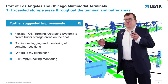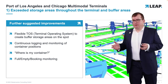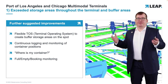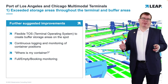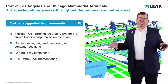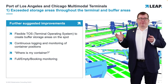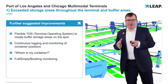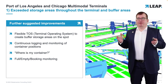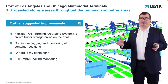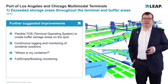For further suggested improvements: with exceeded storage areas, you need to react in the system. First, you need a very flexible terminal operating system — you need to create buffer storage areas on the spot in the system, otherwise you lose track of all your containers stored within the terminal. You need to continuously log and monitor container positions, and find your full containers, booked containers, and empty containers on the spot. This can only be achieved by system-backed processes. If you change to a paper-and-pen-based process or a spreadsheet during this crisis, you would not get your containers out in time.